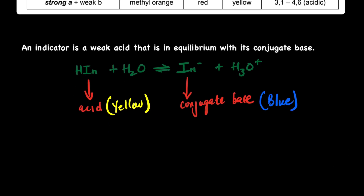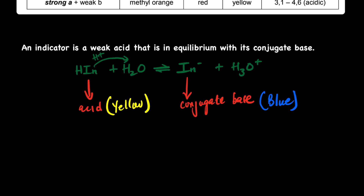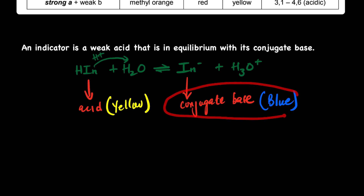An indicator is a weak acid that is in equilibrium with its conjugate base. When this indicator is dissolved in water, there will be protolysis — a proton is donated. The indicator donates a proton to water, forming hydronium, and the acid forms its conjugate base. This is at equilibrium, meaning the rate of the forward reaction equals the rate of the reverse reaction.